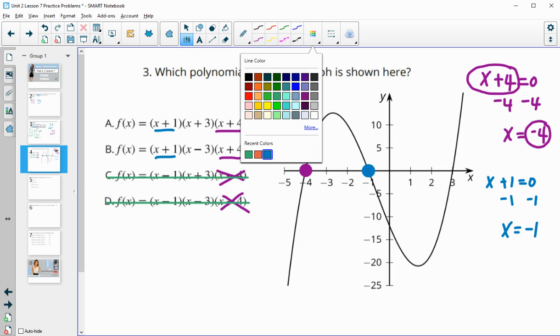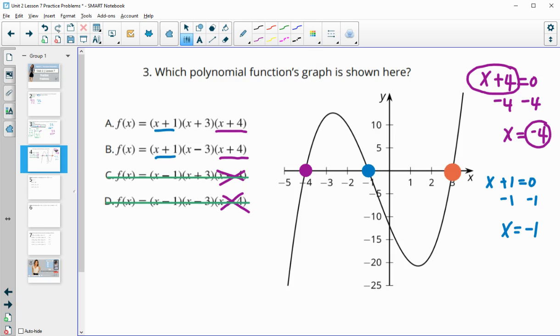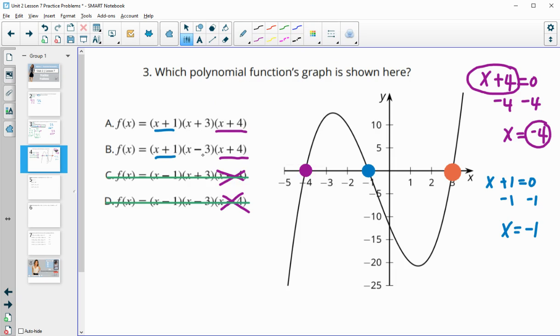We're just deciding which one's going to give us a zero of 3. If we want the zero to be 3, we want the factor to be the opposite. So we're going to want this one, because when I do x minus 3 equals 0, when we add 3 to both sides, we get positive 3 for our zero, which is what we had here. So A would be our answer for this.